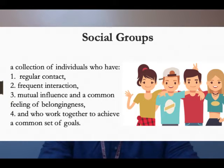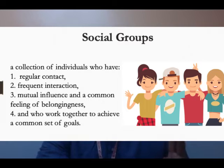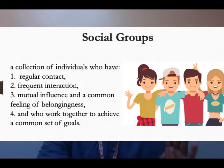Now let's define social groups. A social group is a collection of individuals who have: (a) regular contact, (b) frequent interaction, (c) mutual influence, and (d) a common feeling of belongingness. Additionally, they work together to achieve a common set of goals. If you don't meet often, don't have mutual influence or a feeling of belongingness, or work against each other's goals, you cannot be considered a social group.